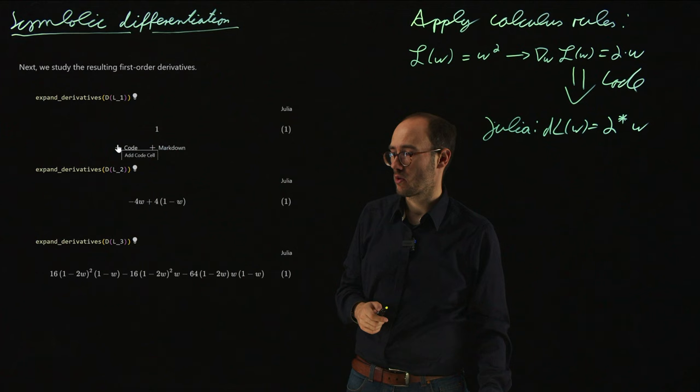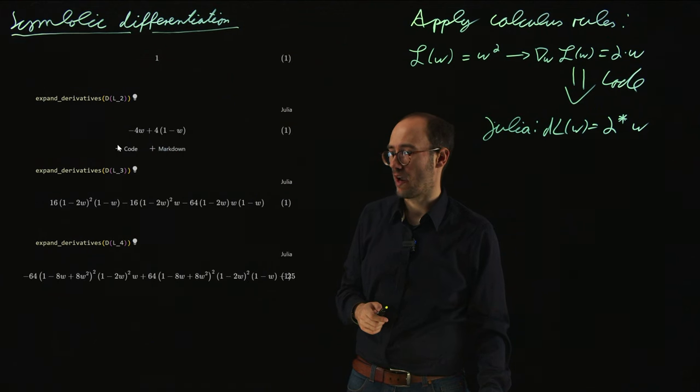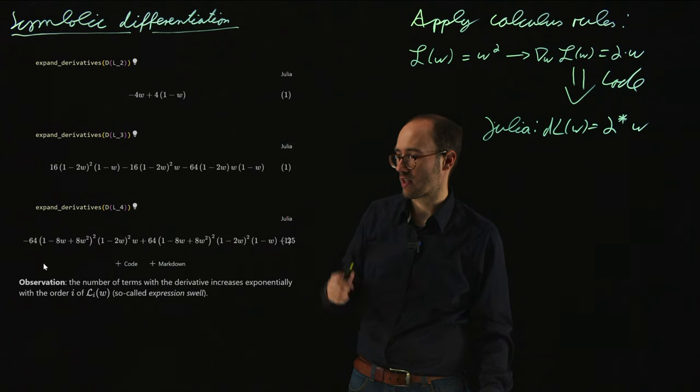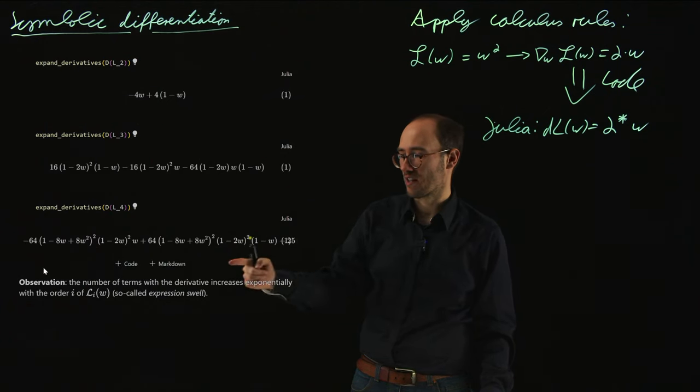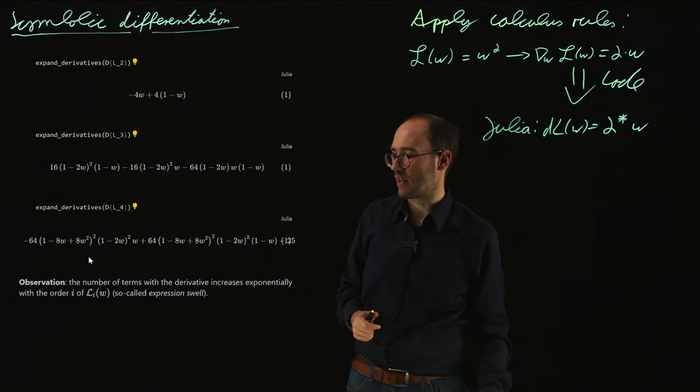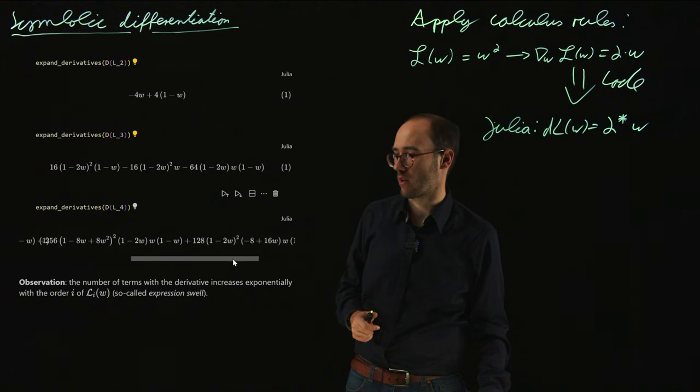However, what we can observe from that, especially if we go to higher orders like the logistic map of order 4, here especially down there, that is really a big expression. So if we look at this entire expression here, it actually goes further along this way. So this is only a part of the expression. This is like a really long expression actually.